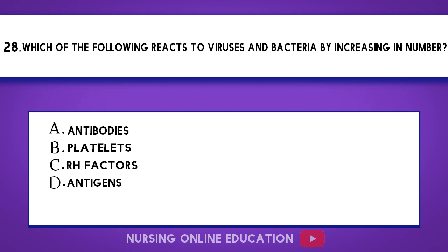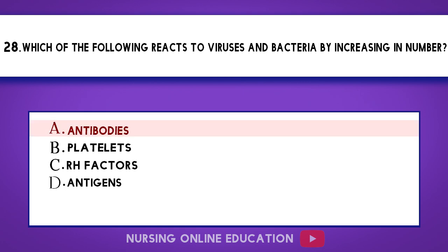Question 28. Which of the following reacts to viruses and bacteria by increasing in number? A. Antibodies. B. Platelets. C. Rh factors. D. Antigens. The answer is option A: Antibodies.